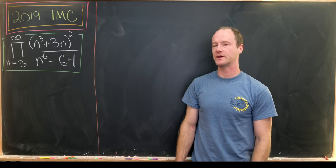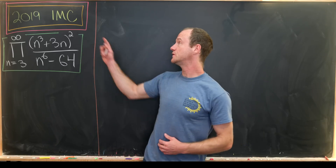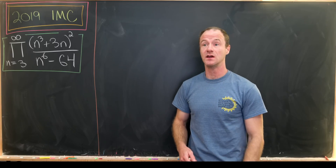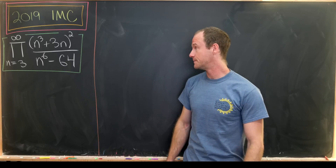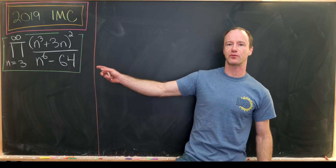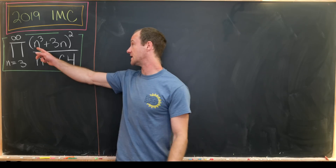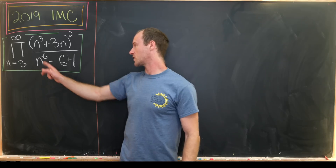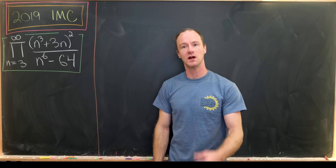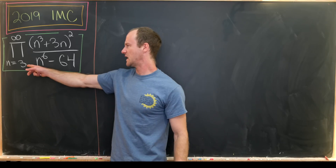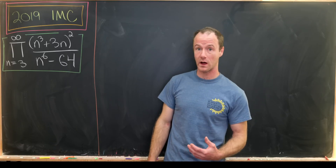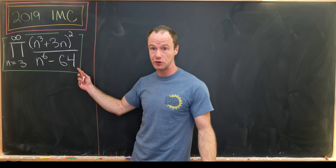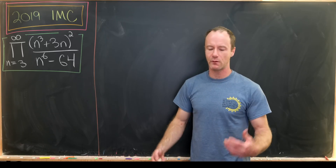I've got a really cool video for you guys today. It comes from the 2019 IMC, which is an undergraduate level math contest contested in Europe. It's this cool infinite product — we have the product as n goes from 3 to infinity of n cubed plus 3n, all squared, over n to the 6 minus 64. Note that we can't start at 2 or 1 because that would include the n equals 2 term and zero out the denominator.